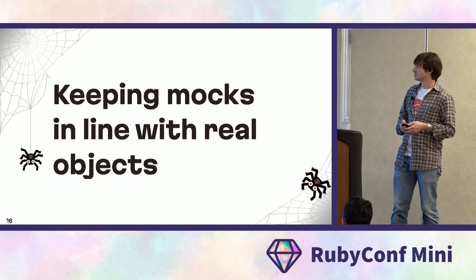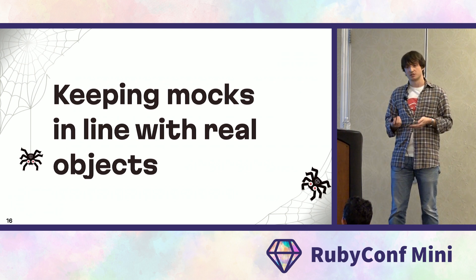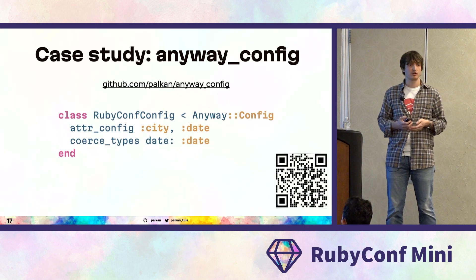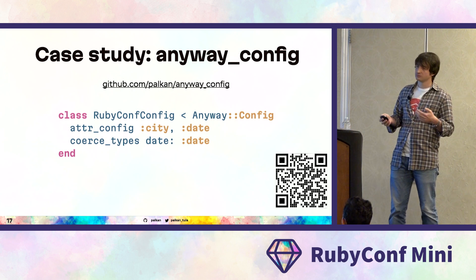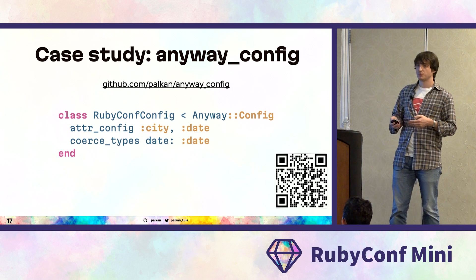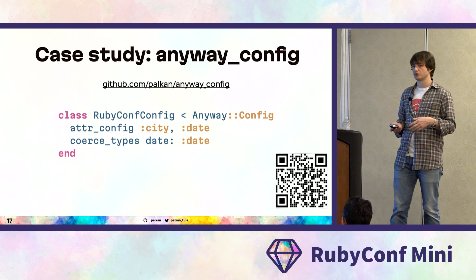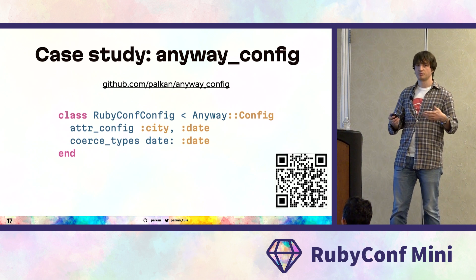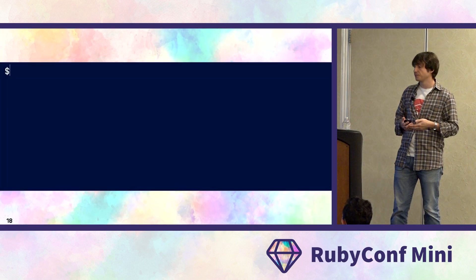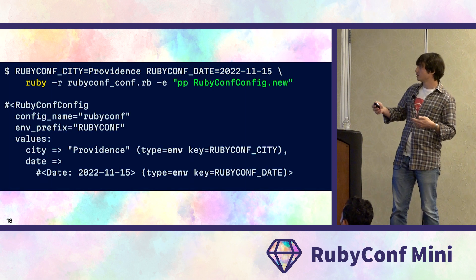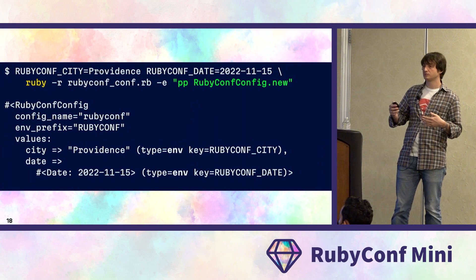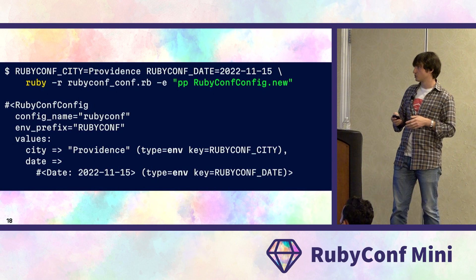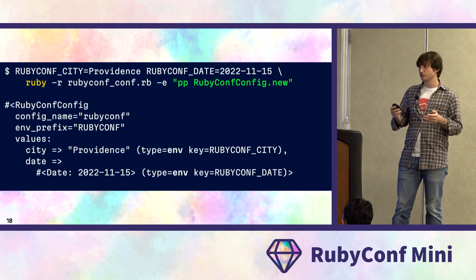To demonstrate the problem and the solutions, I need some playground. I chose one of my open source projects: a library called AnywayConfig. It's a configuration library for applications and gems, which allows you to separate the concept of a configuration object from the configuration source. You use Ruby objects to represent your parameters and the library populates them from different sources, for example from environment variables.